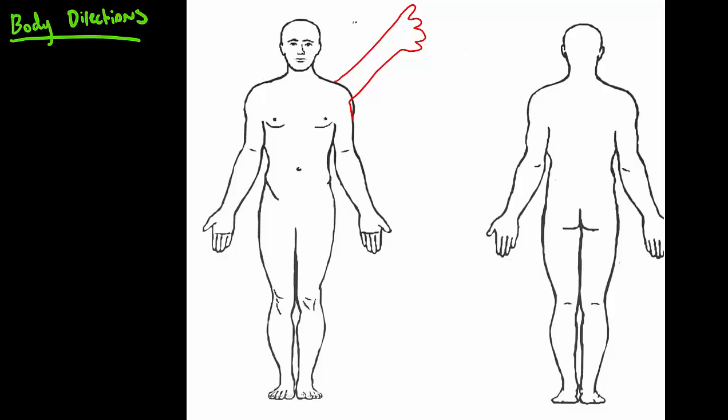Now if you said the hand was superior to the head, you would be wrong. Because when we are talking about anatomical body directions, we are always talking about in reference to anatomical position. So you kind of have to move things around in your mind and put it back in anatomical position before you assign a body direction to it.